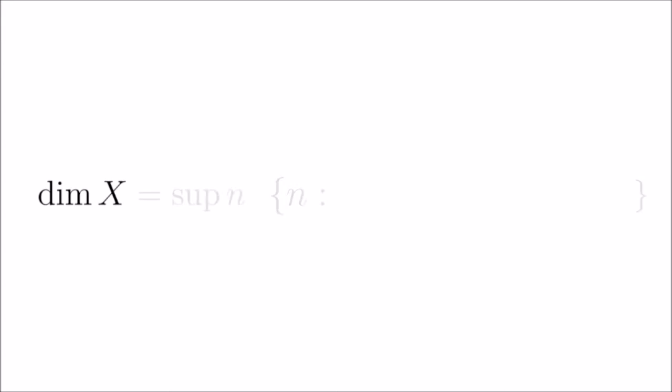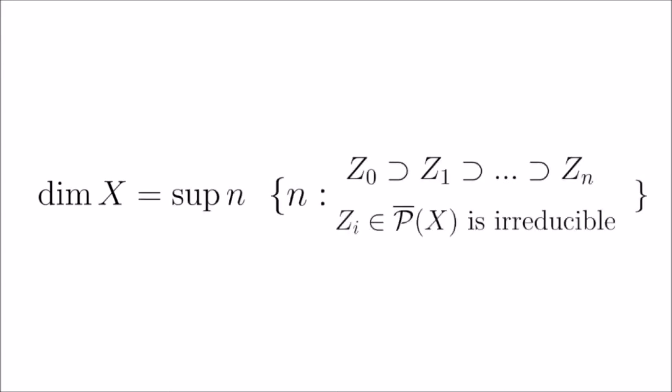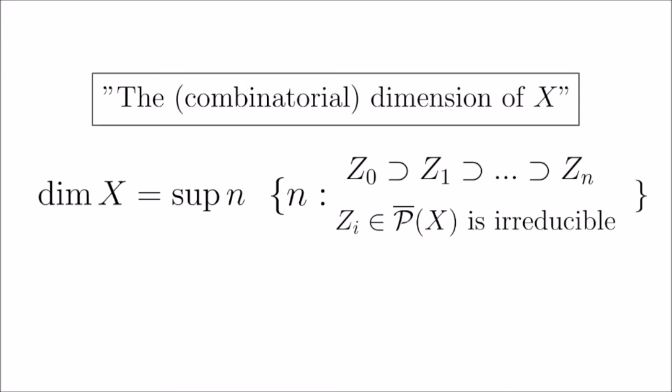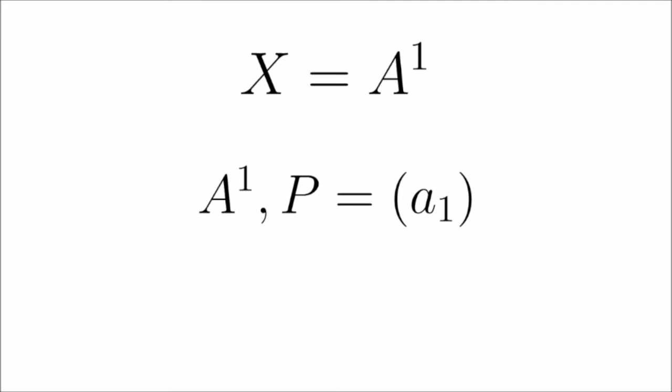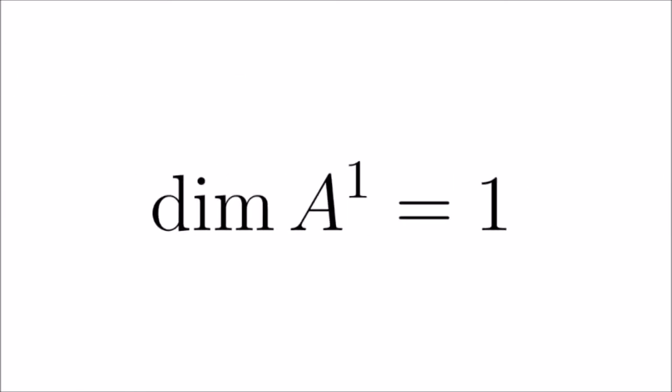We now establish a new combinatorial tool: the dimension of a topological space X, denoted dim X, is the supremum of n such that there exists a strictly decreasing chain of n+1 non-empty irreducible closed subsets. This is called the combinatorial dimension. We compute the dimension of A^1: its only closed irreducible subsets are itself and singletons, so a maximal chain of irreducible closed subsets consists of two sets, giving dim A^1 = 1.